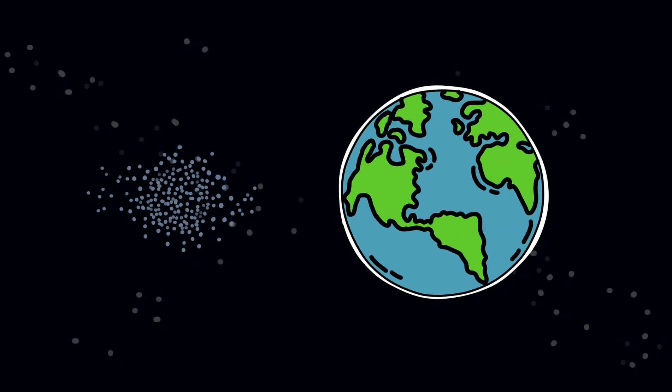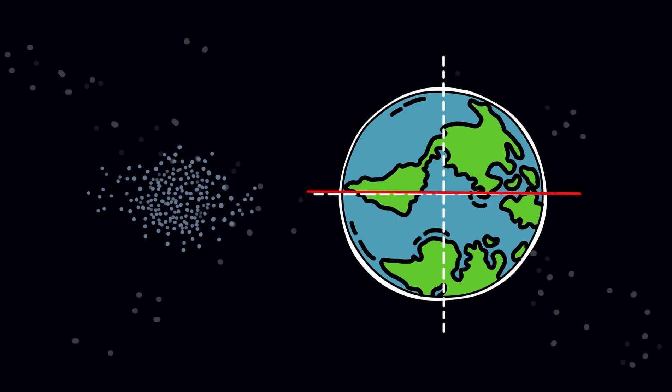No moon? Earth could start wobbling like a toddler on roller skates. Between 10 to 45 degrees. That's not a tilt. That's a panic.